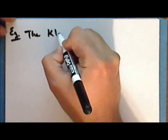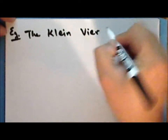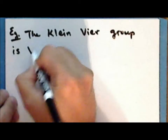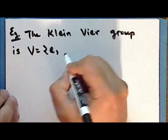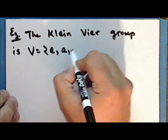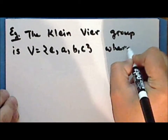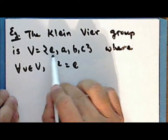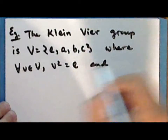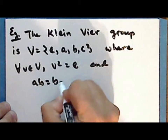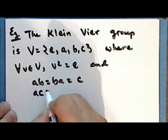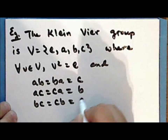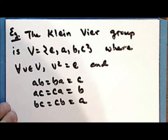We can now look at a finite example: the Klein four-group, with elements e, A, B, and C, where for each element the square of that element is the identity. That is, each element is its own inverse. A×B=B×A=C, A×C=C×A=B, and B×C=C×B=A. Notice that the Klein four-group is Abelian.